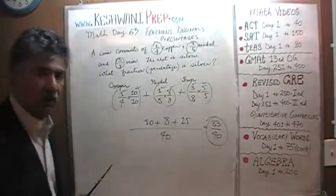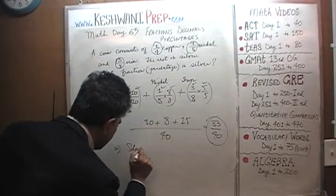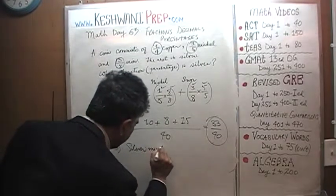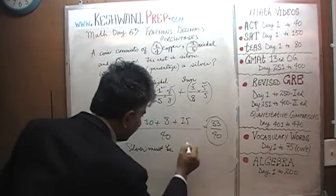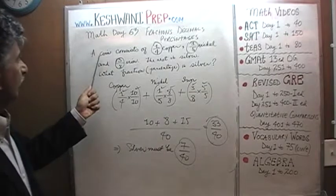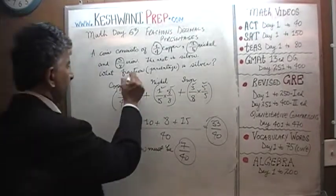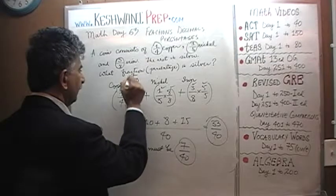Since they add up to 33 over 40, that implies silver must be the leftover, which is 7 over 40. The question was: what fraction is silver? The answer is 7/40. That part is done.